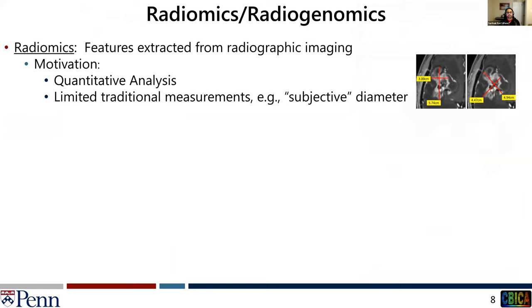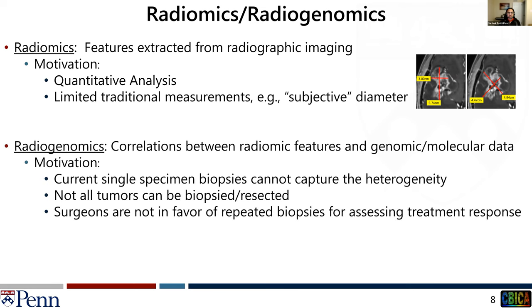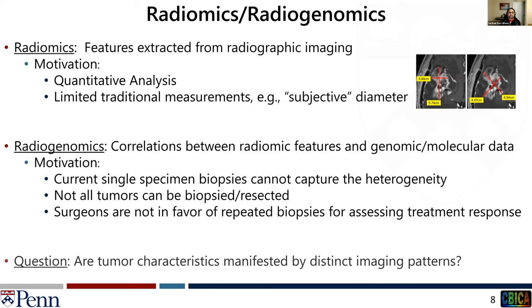Let's put more detail on some terminologies, starting with radiomics, which defines features extracted from radiographic imaging and allows for quantitative analysis. Radiogenomics, on the other hand, defines correlations between these radiomic features and genomic or molecular data. This is valuable because a single biopsy simply cannot capture the full heterogeneity, and not all tumors can be biopsied or resected. The question we have been trying to answer is: can tumor characteristics be manifested by distinct imaging patterns?